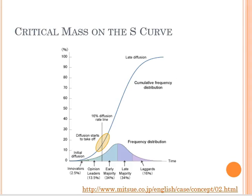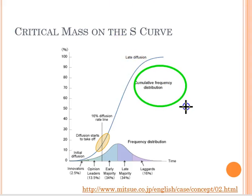When we think about critical mass — a self-sustaining adoption where things will continue on without us having to do much anymore — we're looking at placing that critical mass on the s-curve. We've reached the point where we have late diffusion happening and more and more people are continuing to buy into the process.